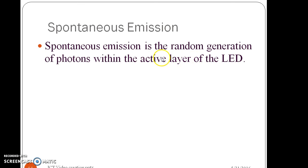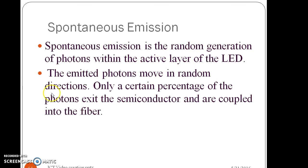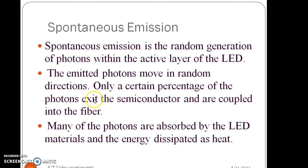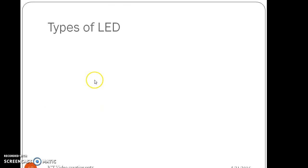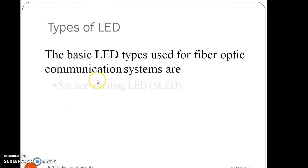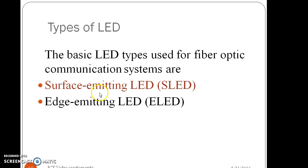The spontaneous emission taking place in LED is known as random generation of photons, where all the photons are not in same phase. There are different types of LEDs such as surface emitting LED and edge emitting LED.